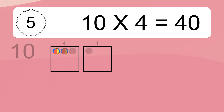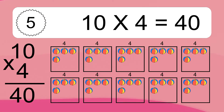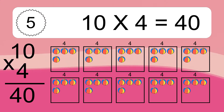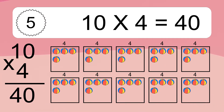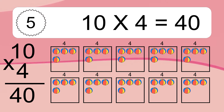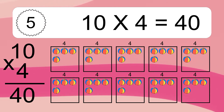10 times 4 equals 40. We have 10 boxes, and each box has 4 colorful balls inside. If you count all the balls in all the boxes together, you will have 10 times 4 balls. This equals 40 balls.